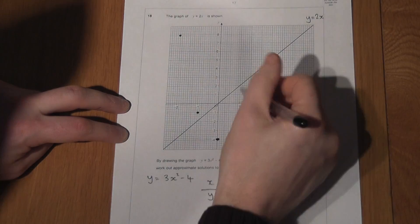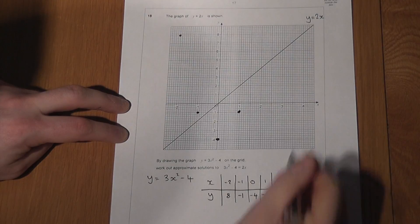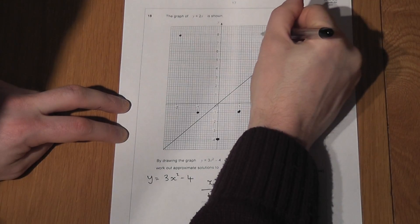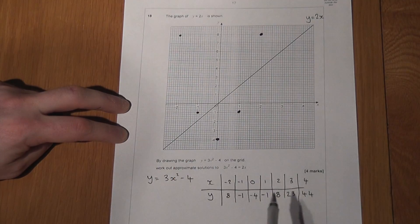When x was 1, y was minus 1. And when x was 2, y was 8. I can't plot these last two coordinates because the y-axis stops at 8.